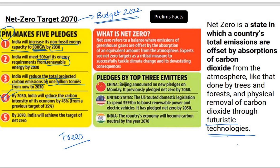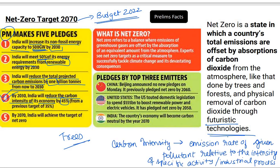By 2030, India will reduce the carbon intensity of its economy by 45%. Carbon intensity — also known as emission intensity — is the emission rate of a given pollutant relative to the intensity of a specific activity or industrial production process. For example, grams of carbon dioxide released per megajoule of energy produced, or the ratio of greenhouse gas emissions to energy produced.